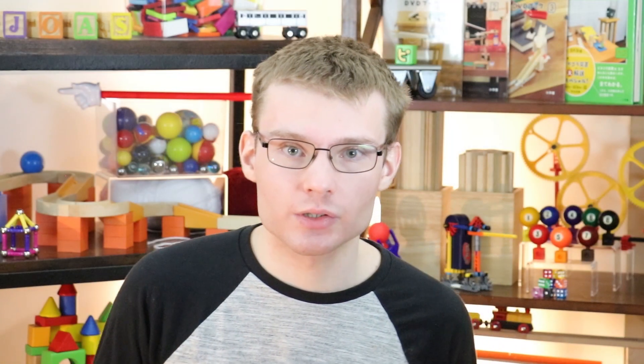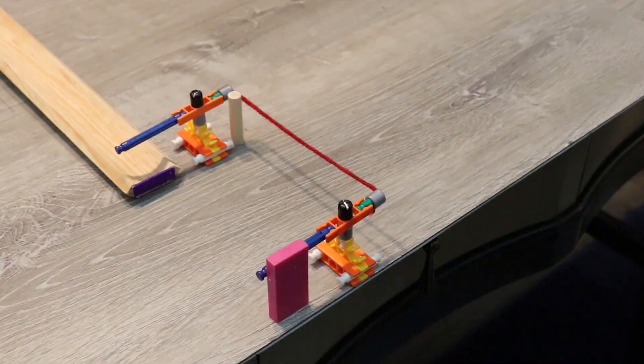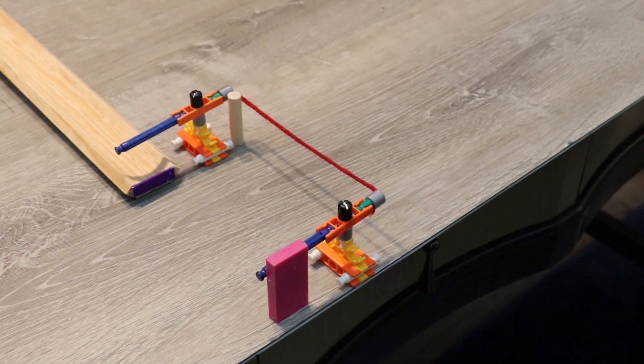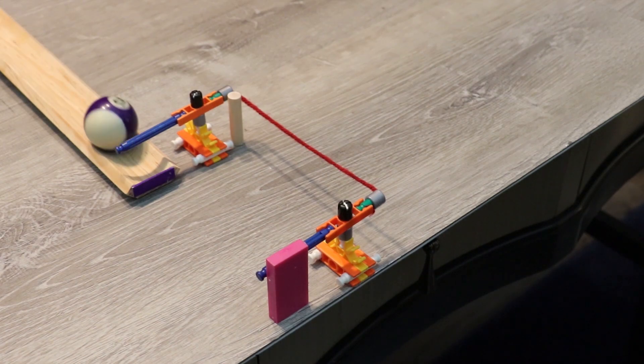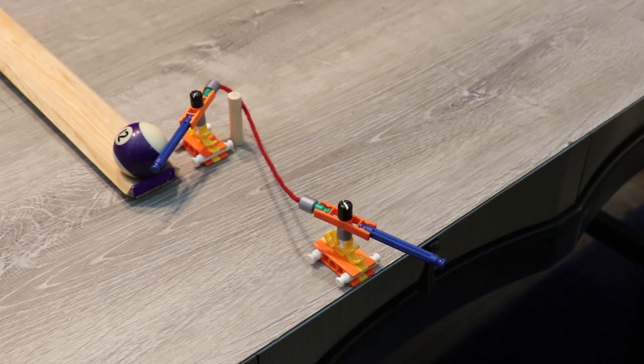Paired levers are two levers that are connected either by joints or by string, such that when one lever moves, that motion is mirrored in the other. So here's a classic example. Two levers connected by a string. When the ball hits one of the levers, that motion is transferred identically to the other lever, knocking the domino off the table.